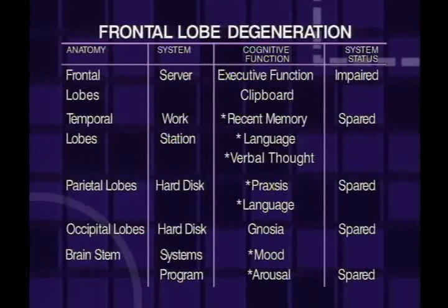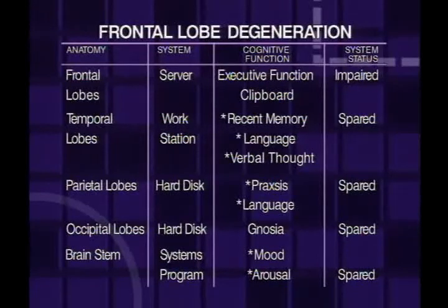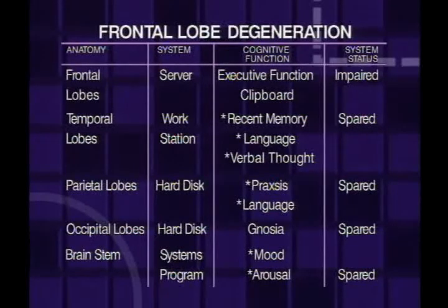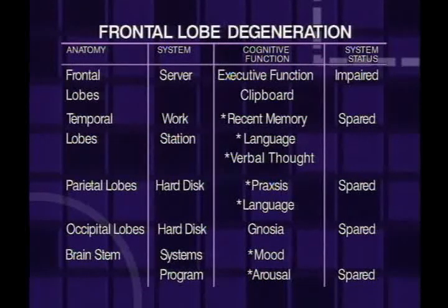If you want to think of the brain as a computer, your workstation is located in your temporal lobes, your hard disk is located in your parietal and occipital lobes, and the brainstem contains the systems programs that tells the whole computer how fast to run. What happens in frontal lobe dementias is that the workstation and the hard disk are still operating properly, but the server that keeps the system running has been damaged by the disease.